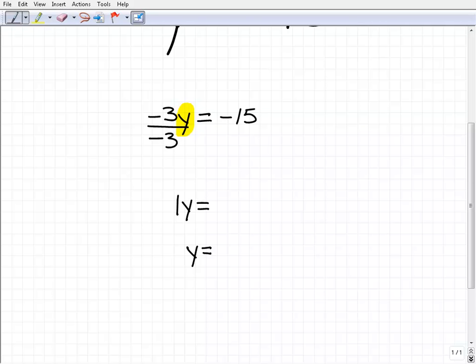It doesn't make a difference what it is. So anything divided by itself is 1. So if I took that negative 3 and I divided it by negative 3, I'm going to get 1, and that's what I want.